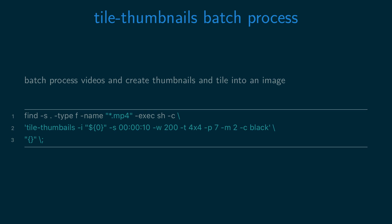You can batch process videos and create thumbnails and tile them into an image using the Tile Thumbnails script and the Find command. In this example we'll use the Find command to find all the MP4 files in the current directory and then run the Tile Thumbnails script to create thumbnails and tile them into an image for each of the videos.